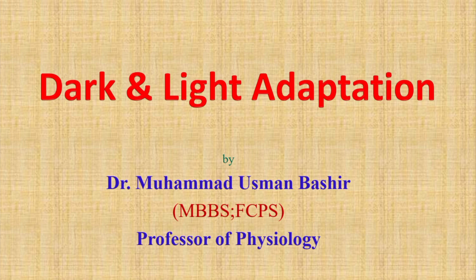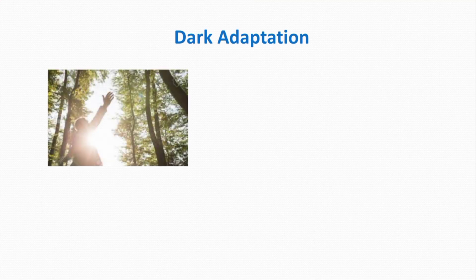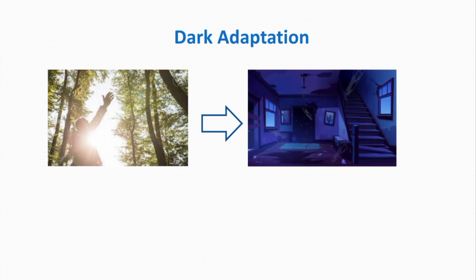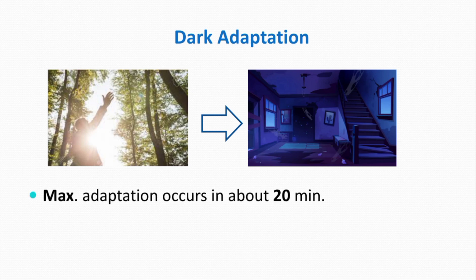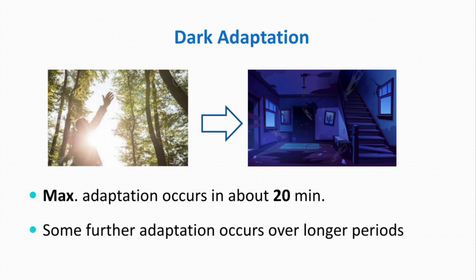Dark adaptation means that when a person remains for some time in a very bright environment and then suddenly moves to a dark environment or dim light, then his eyes gradually become able to see in the dark. This is called dark adaptation. Maximum adaptation occurs in about 20 minutes, and some further adaptation occurs over longer periods.